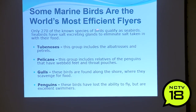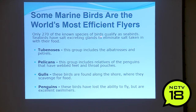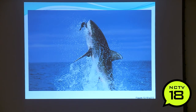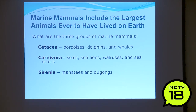Some marine birds are the world's most efficient flyers. There are 270 known species that qualify as seabirds. The tubenoses — albatrosses and petrels — are one group. Pelicans have webbed feet and throat pouches; I just came back from Texas and got to see white and brown pelicans. We all know seagulls. Penguins don't fly but are great swimmers. Here's a top predator — a great white shark eating a sea lion.